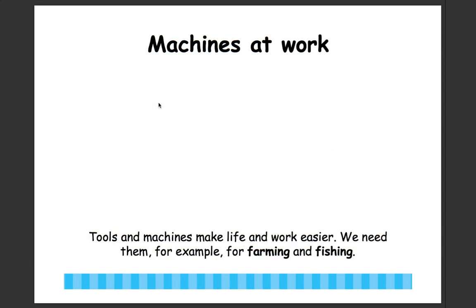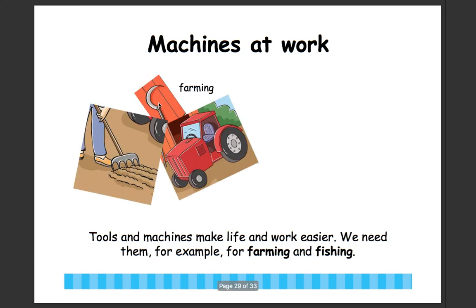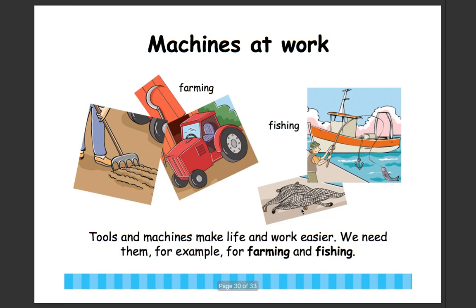Tools and machines make life and work easier. We need them, for example, for farming and fishing. For farming, we use rakes, sickles, and tractors. And for fishing, we use boats, fishing rods, anchors, and nets. These are all machines that help make life and work easier.